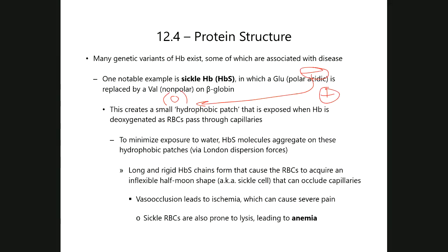It turns out that with sickle hemoglobin you can actually diagnose the disease by taking blood samples and running electrophoresis on the red blood cell proteins. You'll notice that when compared to normal hemoglobin A, the hemoglobin S — because it has a slightly higher positivity — will migrate closer to the negative electrode of the electrophoresis analysis, and that's the way that you diagnose the disease.